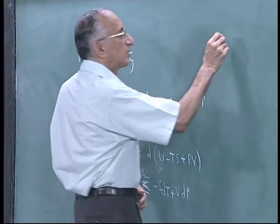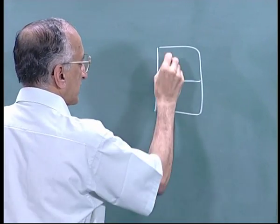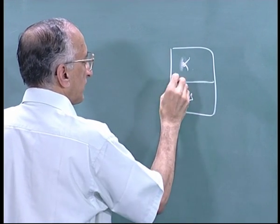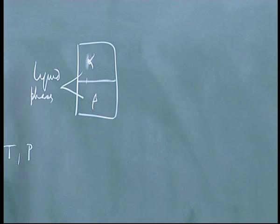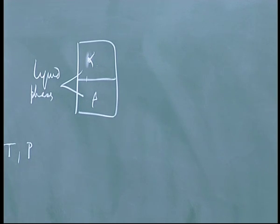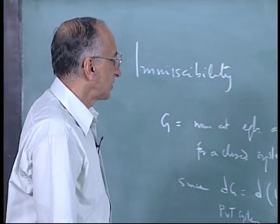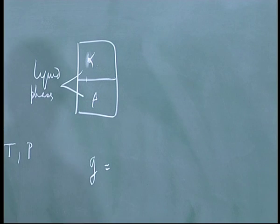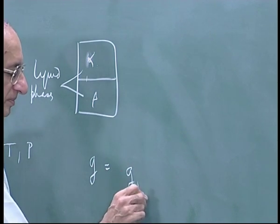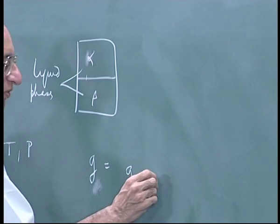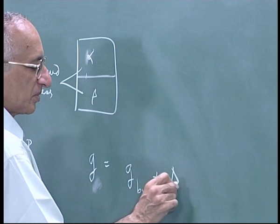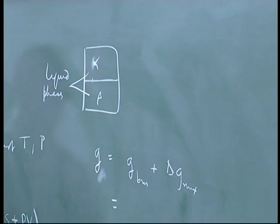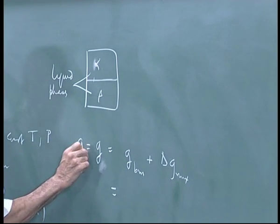G is a minimum at equilibrium. Let me write down G for a system of two phases — an alpha phase and a beta phase, both liquid. In the example we had ethyl acetate and water with azadiractin distributed between two phases. Writing G per mole of total contents: G equals G before mixing plus delta G mixing, which is the same as G after mixing.